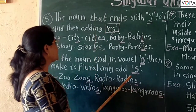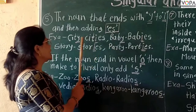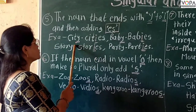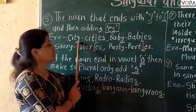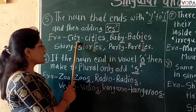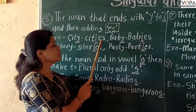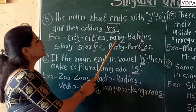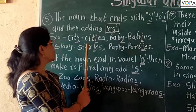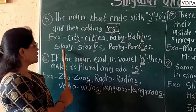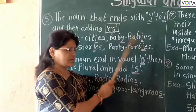For example: city becomes cities — we remove the y and add -ies. Baby becomes babies. Story becomes stories. Party becomes parties.